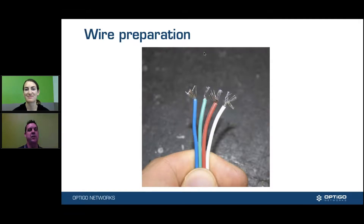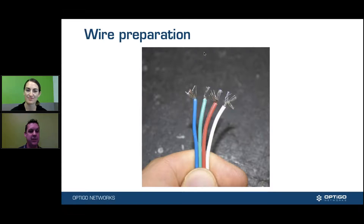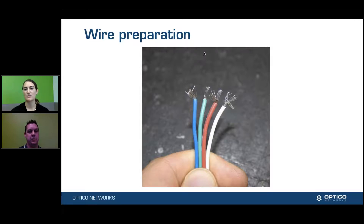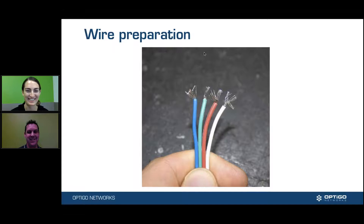Wire preparation is absolutely key. You want it nice and twisted, make sure you don't have any loose strands, and make sure your insulation is stripped back far enough so you can actually put it under the terminal and it makes connection. All of these things don't seem as critical as they are, but any one of these that you've missed will mess up your MSTP network. So just to be clear, we don't want it to look like this picture — no, this probably isn't going to get you too far.